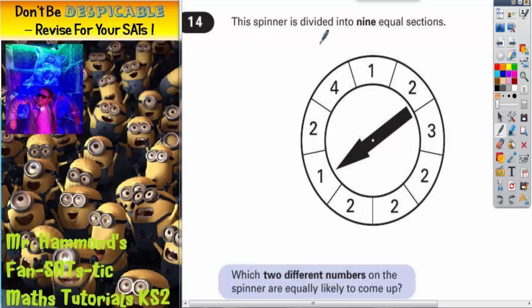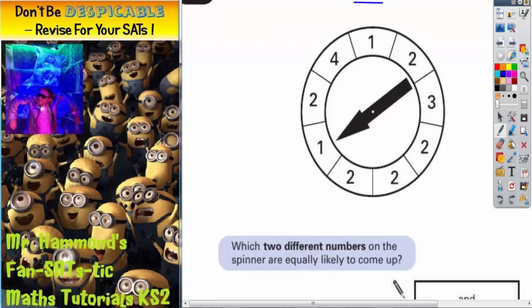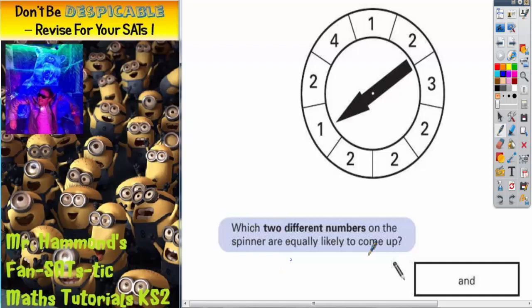Question 14. This spinner is divided into 9 equal sections, so it's out of 9. It says, which two different numbers on the spinner are equally likely to come up?